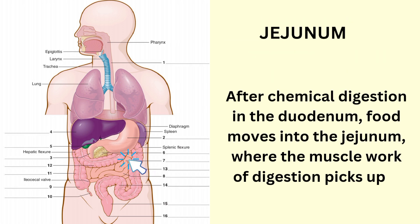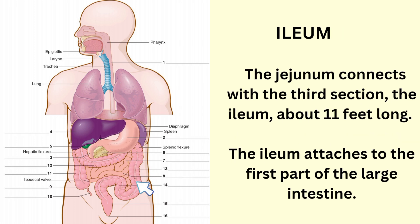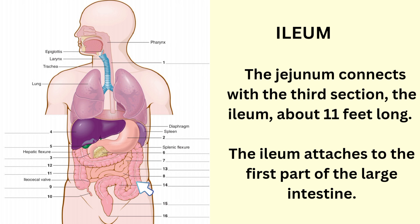Jejunum. After chemical digestion in the duodenum, food moves into the jejunum where the muscle work of digestion picks up. Ileum. The jejunum connects with the third section, the ileum. It's about 11 feet long.